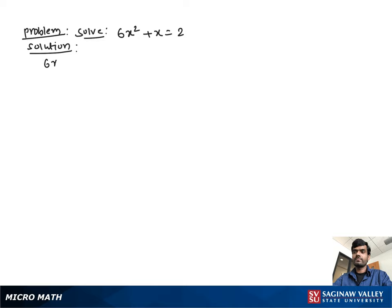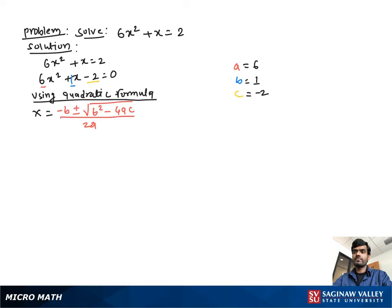Solve 6x² + x = 2. First, we make it a standard form quadratic equation, which will be 6x² + x - 2 = 0. Now determine the value of a, b, c: a = 6, b = 1, c = -2.